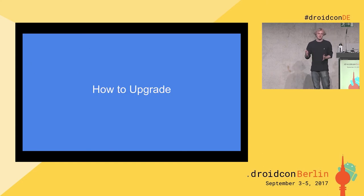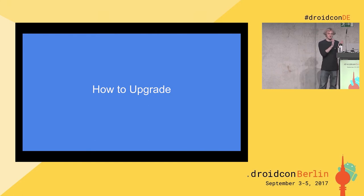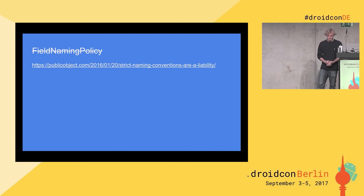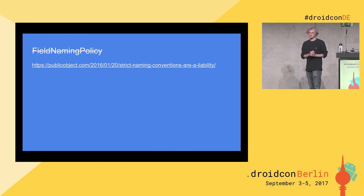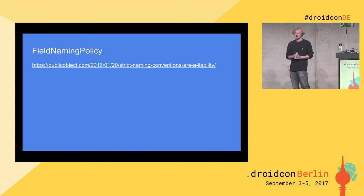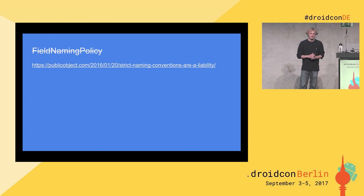So how to upgrade — going from GSON to Moshi given that value proposition. The first thing many people will notice is there's no field naming policy. GSON had this — it was an awkward API where your server uses snake_case and you as a Java developer want camelCase, so you'd tell GSON to map all your camelCase fields to snake_case automatically or kebab-case. There are a few different field naming policies. Moshi doesn't have this.